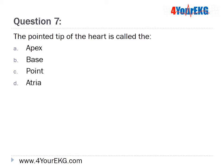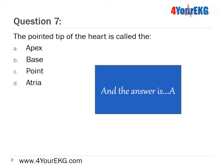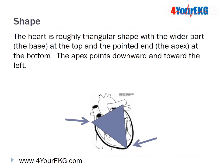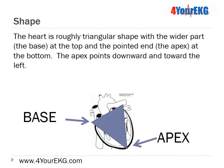Question 7: The pointed tip of the heart is called — A. Apex, B. Base, C. Point, or D. Atria. The answer is A — Apex. The heart is roughly triangular in shape with the wider part, or the base, at the top and the pointed end, known as the apex, at the bottom. The apex points downward and toward the left.